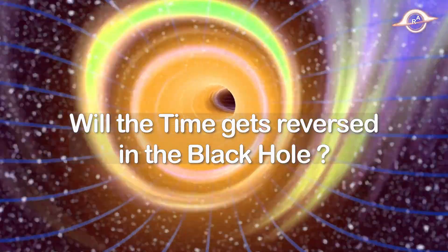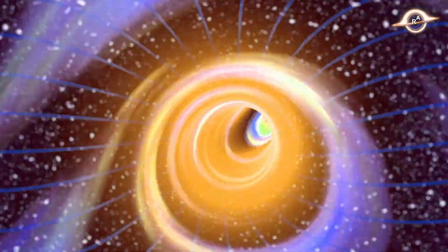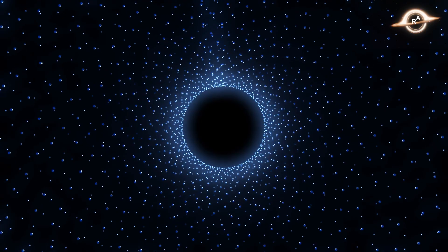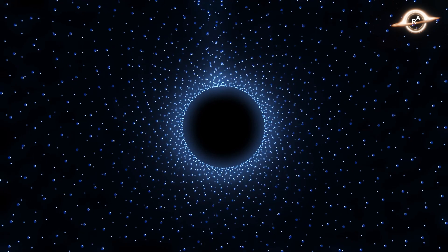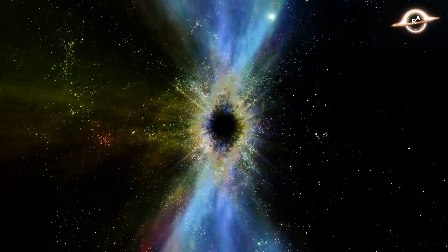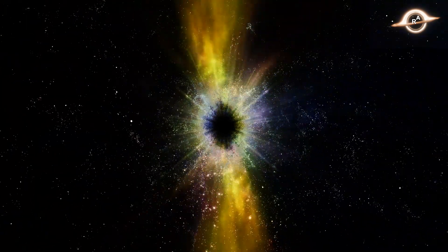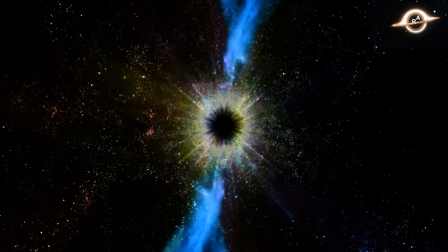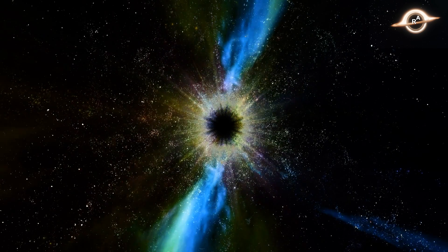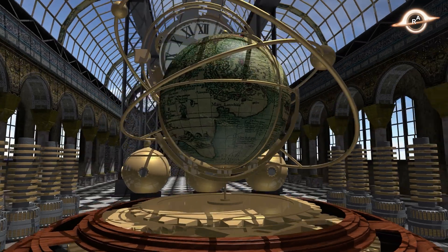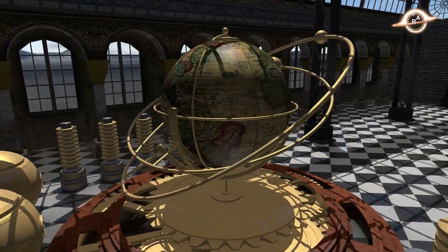One of the interesting consequences of black holes is that they have a significant effect on the flow of time. As an object gets closer to a black hole, time dilation occurs, meaning that time passes more slowly for an observer near the black hole compared to an observer further away. This effect results from the extreme gravitational forces near the black hole, which warp the fabric of space-time, causing time to slow down. Inside the event horizon, the effects of time dilation become even more extreme, and at the singularity itself, time is thought to come to a complete stop.